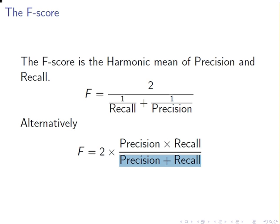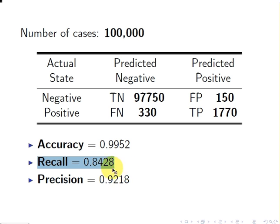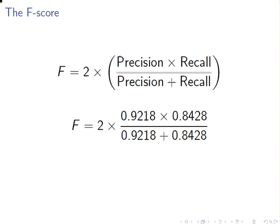Here are some values from an example used in previous presentations. The accuracy metric is 0.9952 — that's the total proportion of correct predictions, and it seems quite a high number. But looking at the other metrics: recall is 0.8428, which suggests there's room for improvement, and precision is 0.9218. Both recall and precision are not quite as impressive as the accuracy. What we're going to do is compute precision times recall divided by precision plus recall, multiplied by two.